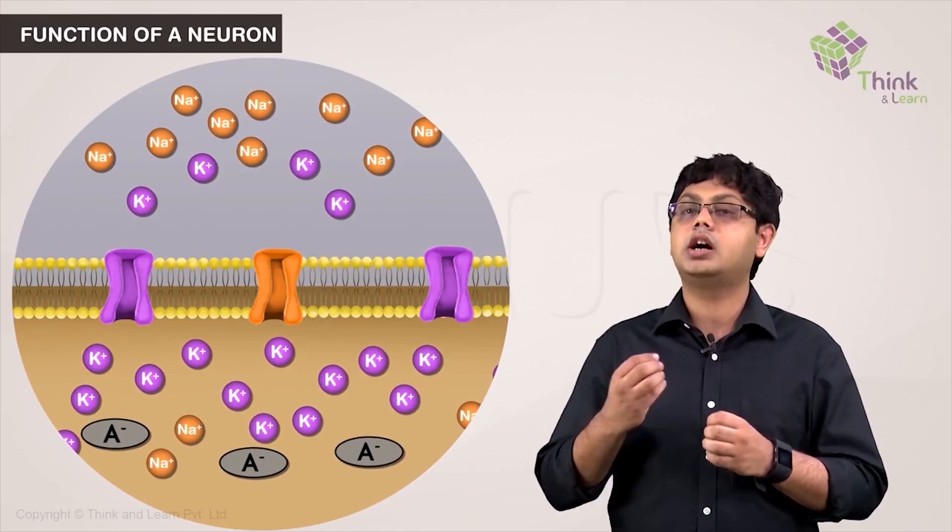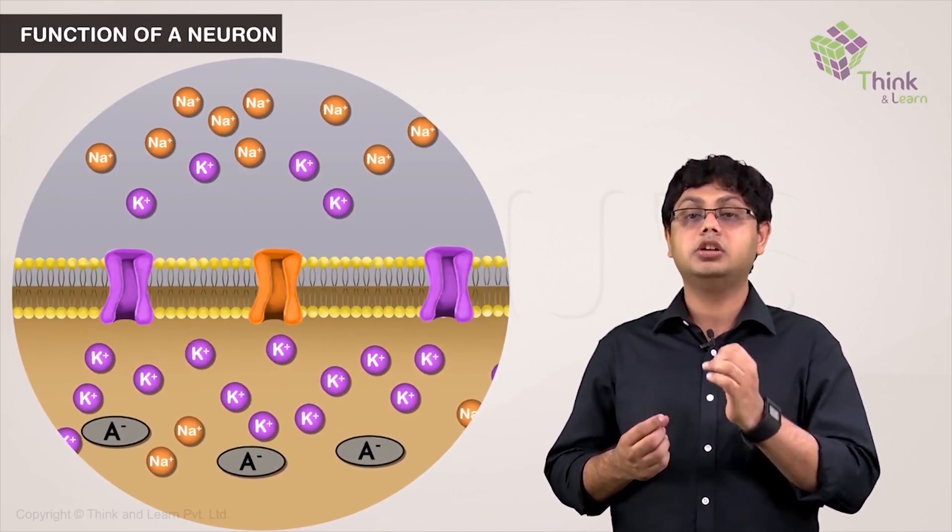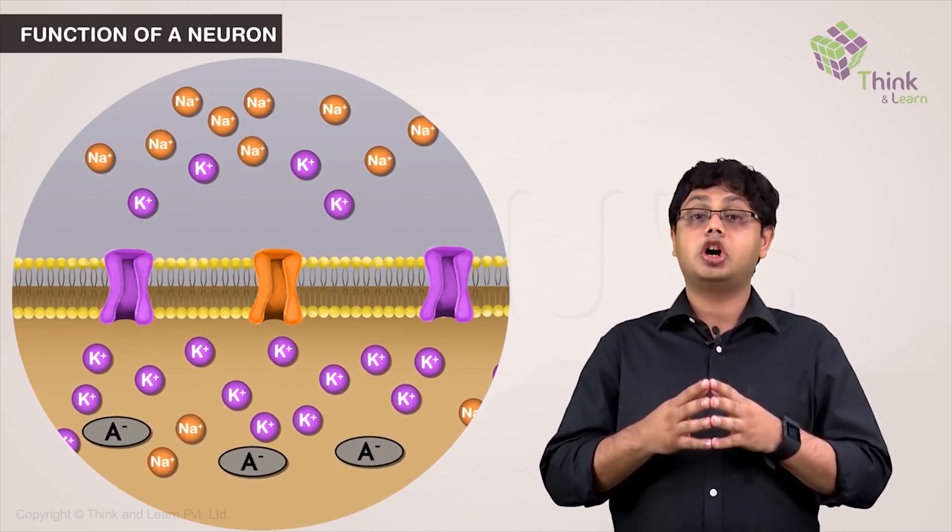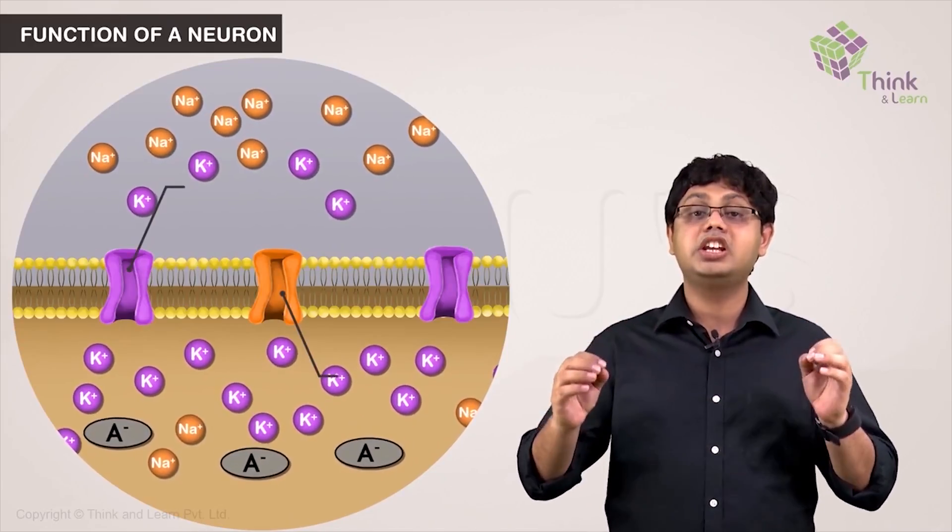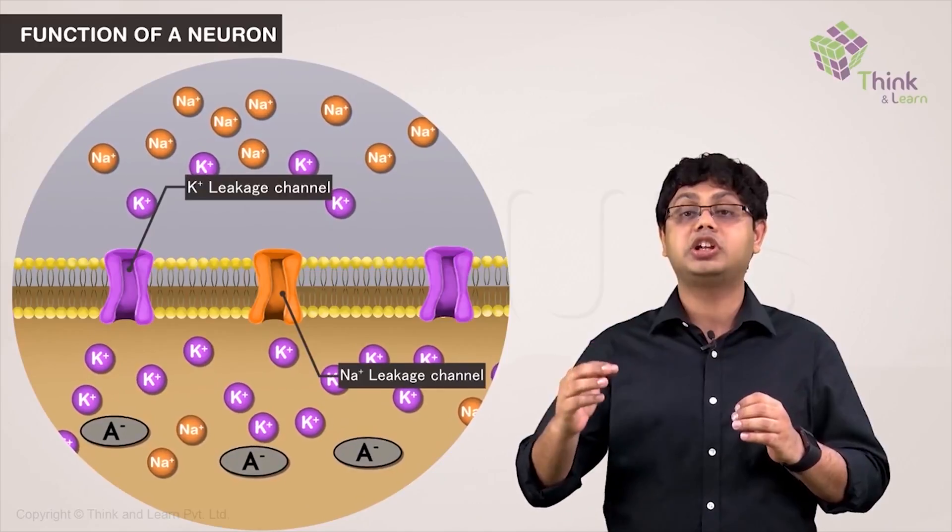However, there is something distinct about neurons that will create this electrical potential. We have seen it already. It is the passive leakage channels of sodium and potassium.